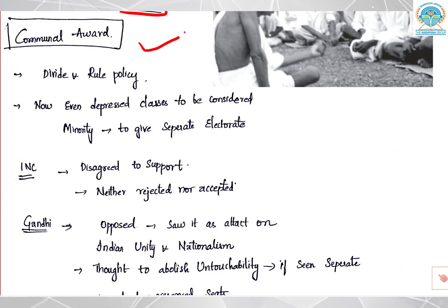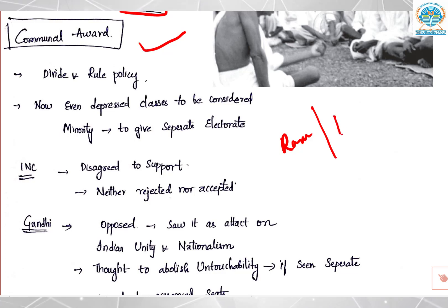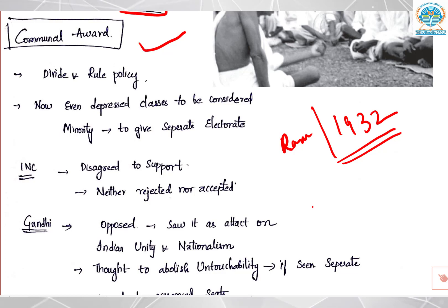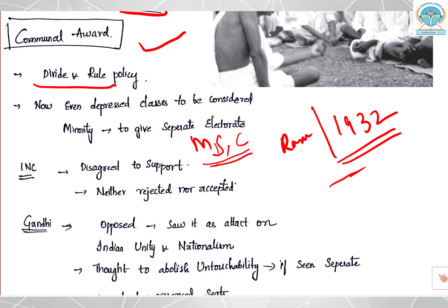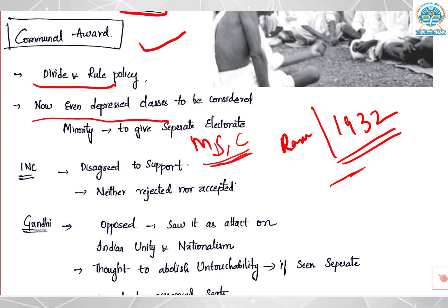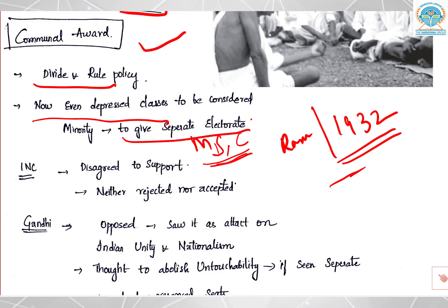By that time, Muslims, Sikhs, and Christians were already recognized as minorities. Now even the depressed classes were considered a minority and would be given a separate electorate — that was the Communal Award. The Indian National Congress disagreed to support it without the consent of minorities. They neither rejected it nor accepted it; they wanted to talk it out first.